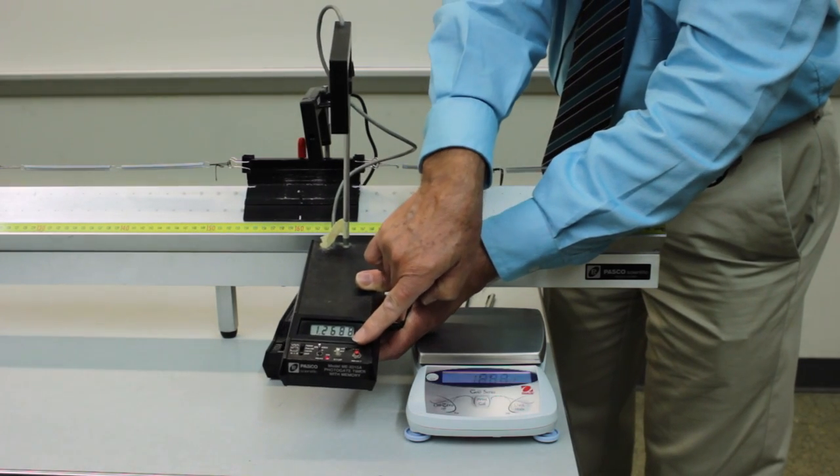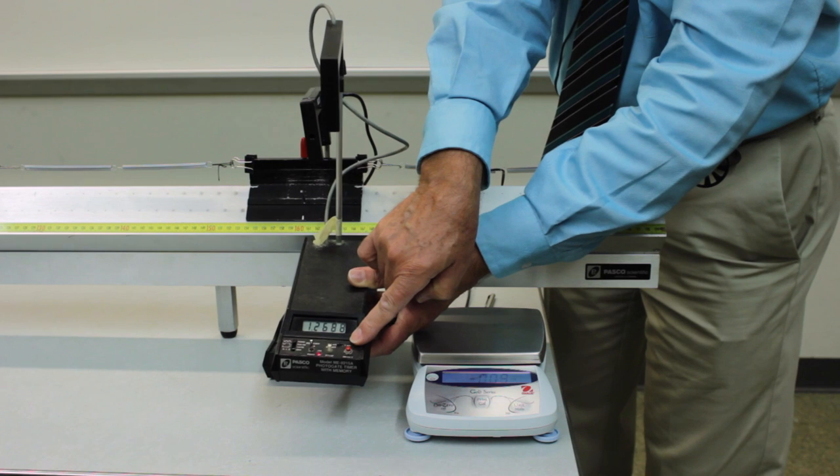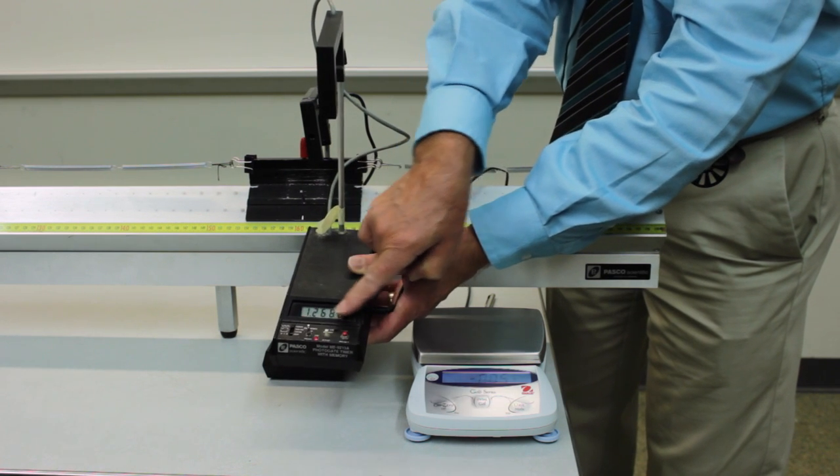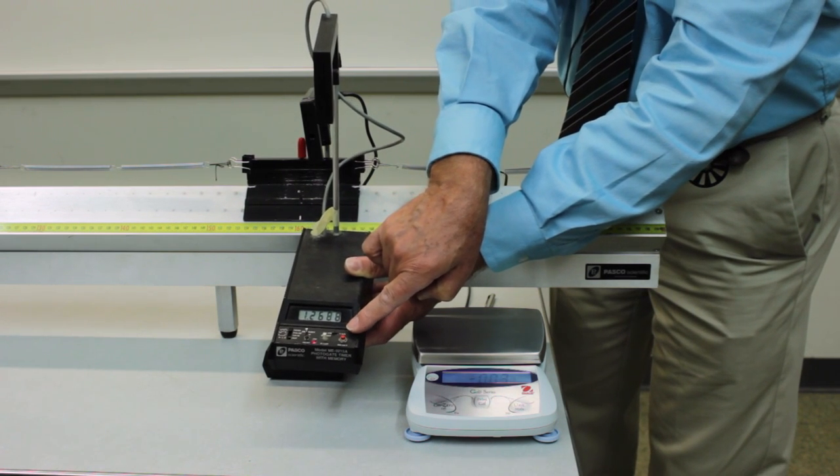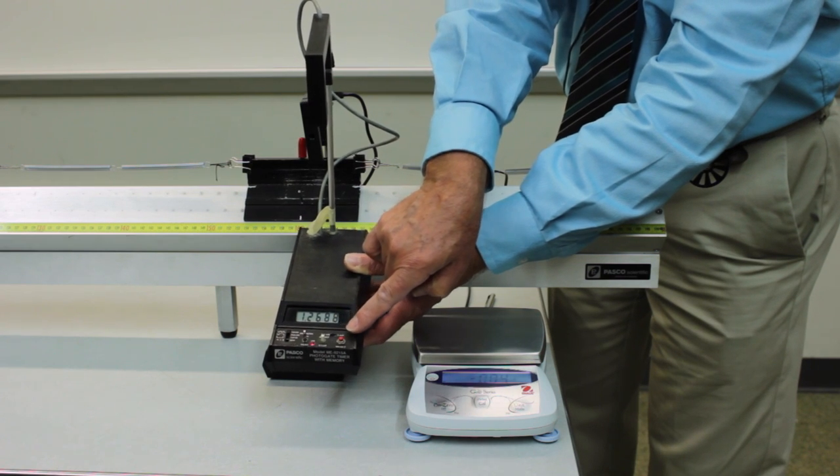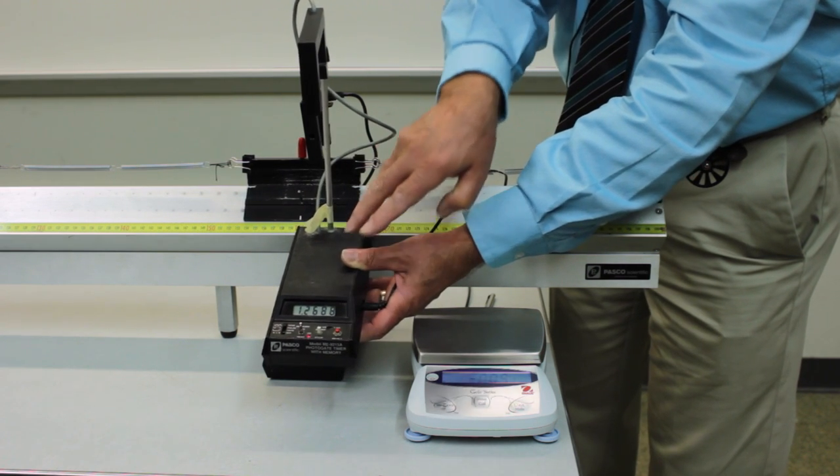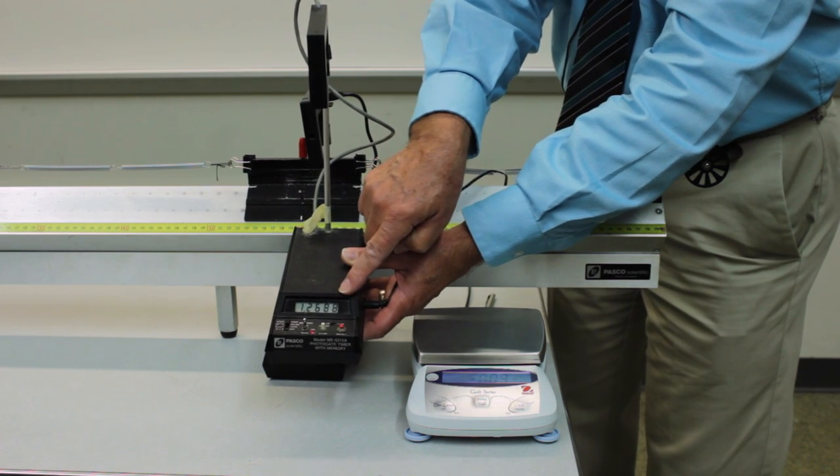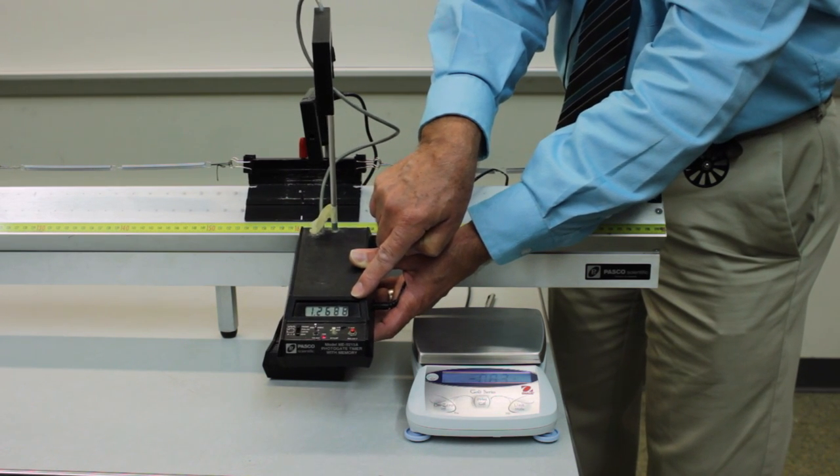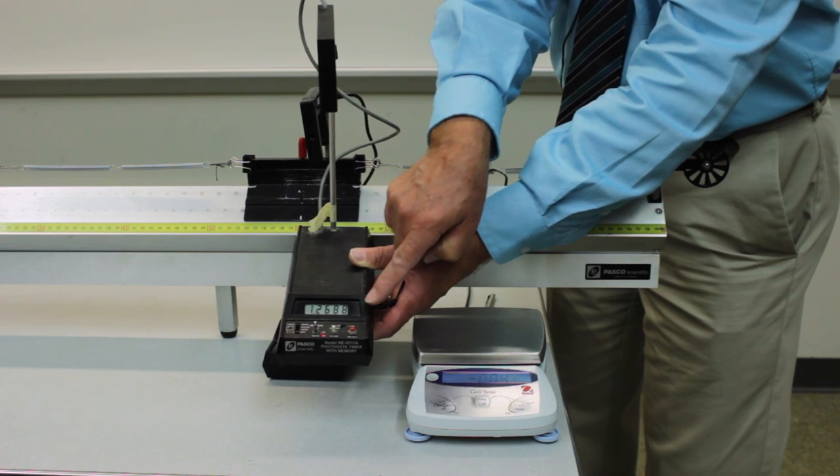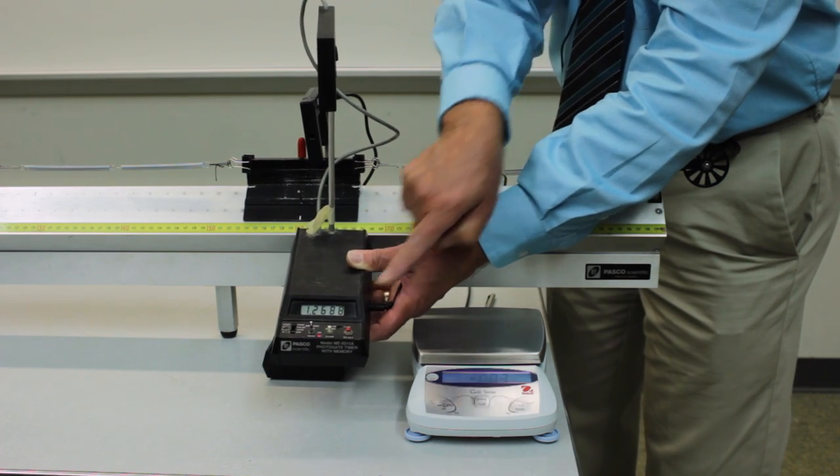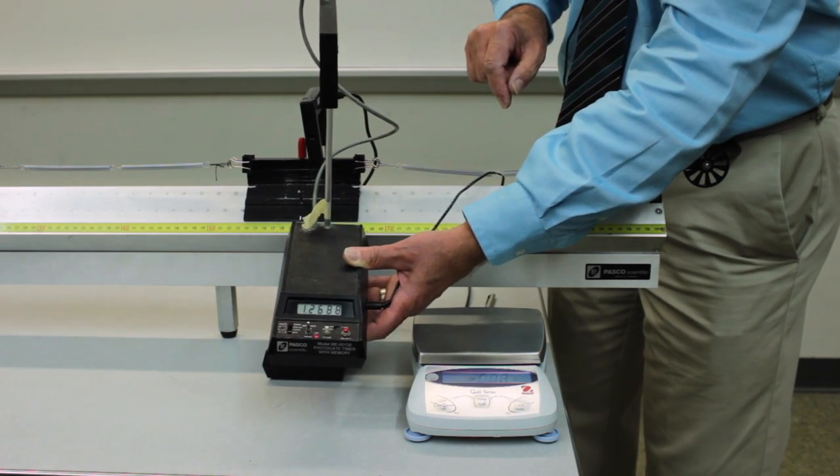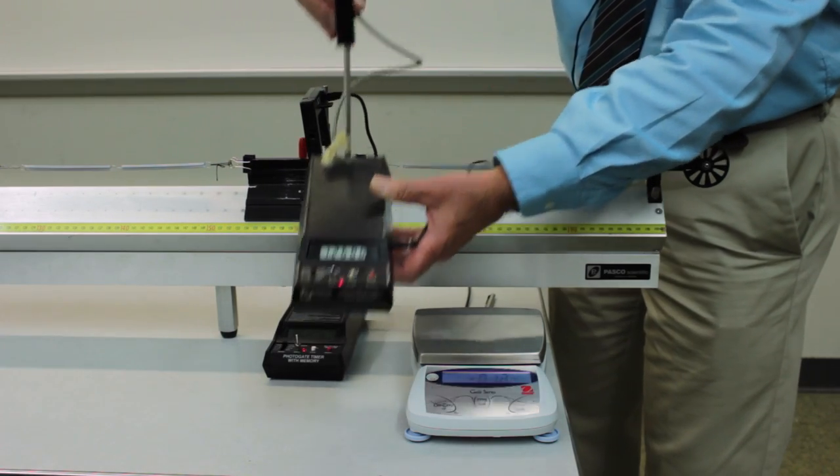Be sure to set the resolution switch to a tenth of a millisecond. We want to be able to measure the period as precisely as possible. And these timers are capable of measuring with a resolution of a tenth of a millisecond. So set the resolution switch to 0.1 millisecond before you begin to measure.